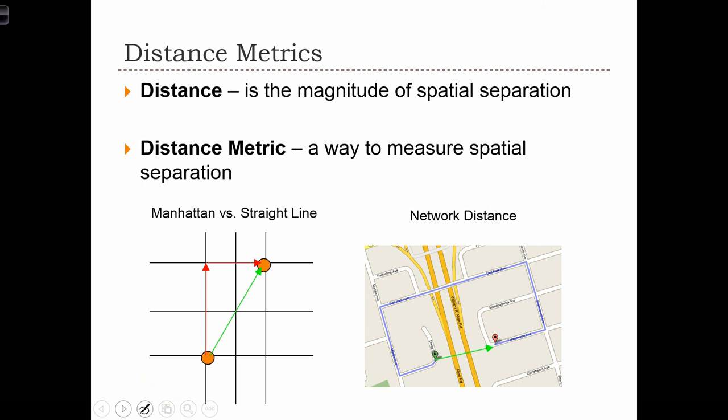Next, we're going to cover the topic of distance metrics. Distance is the magnitude of spatial separation between two objects. And a distance metric is just a particular way in which we choose to measure spatial separation, or the way that we measure distance.